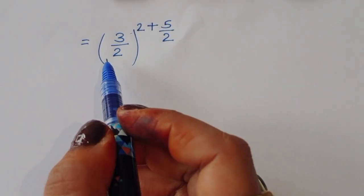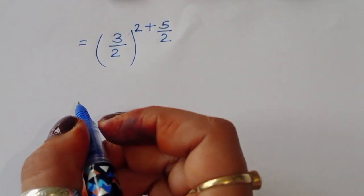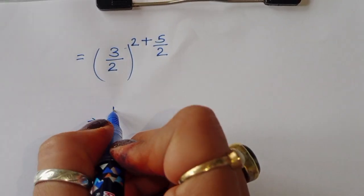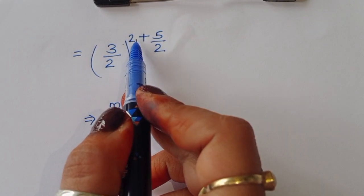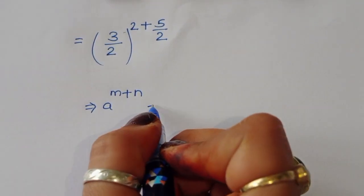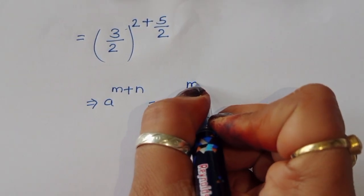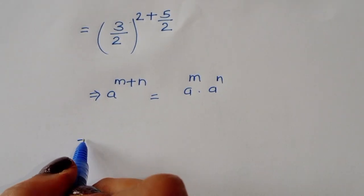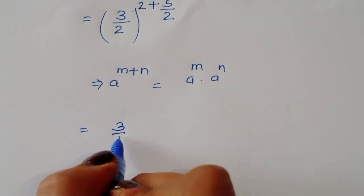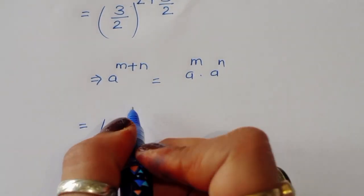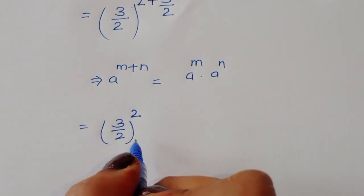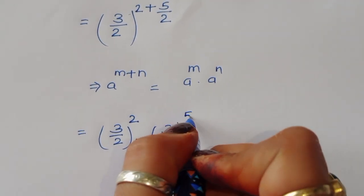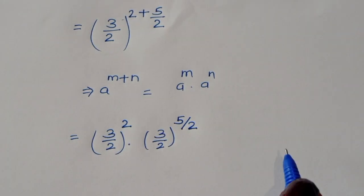Now we apply the formula: a^(m+n) = a^m times a^n. Using this formula, we can write this as (3/2)^2 times (3/2)^(5/2).